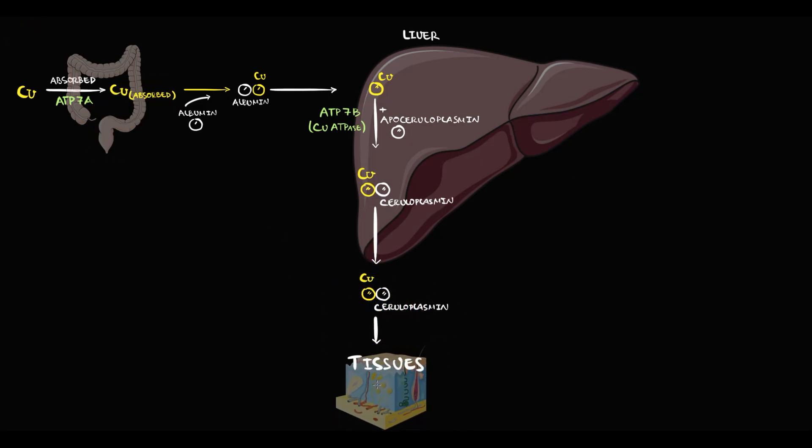Why tissues need copper? First of all, copper is a cofactor of lysyl oxidase, and lysyl oxidase is a crucial enzyme for collagen production. Also, copper is a cofactor of tyrosinase, which is the crucial enzyme in melanin production.